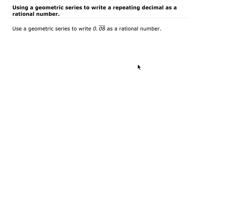In this lesson, I'm going to show you how to use a geometric series to write 0.08 repeating — so 0.08, 0.08, and so on — how to write that as a rational number.